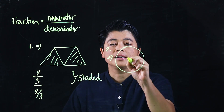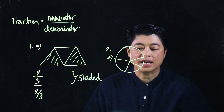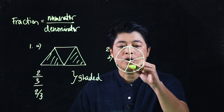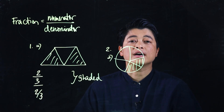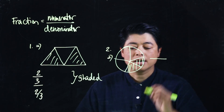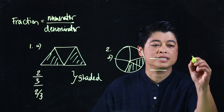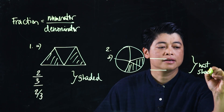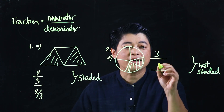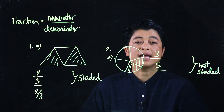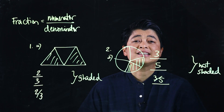Problem number two, letter A, has a circle divided into five parts. Two of the five parts are shaded. The question asks how many parts are not shaded. Three out of five parts are not shaded, making three-fifths of the whole figure not shaded.